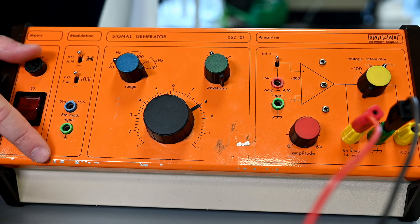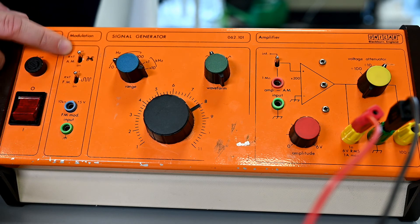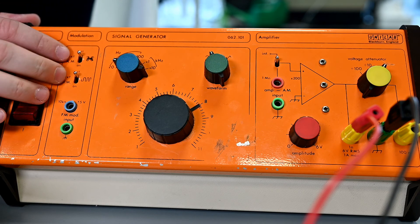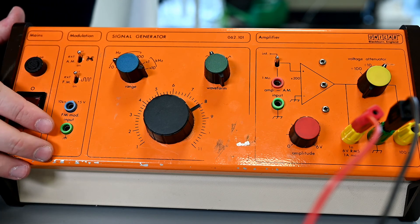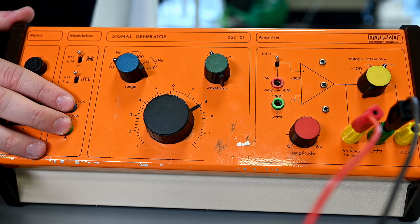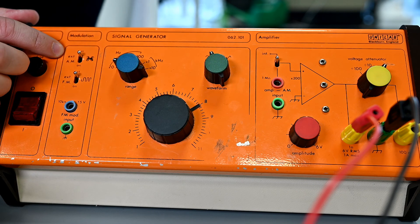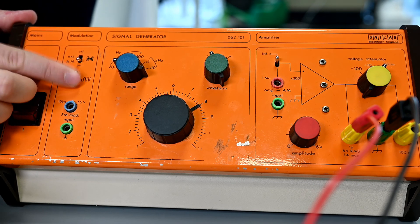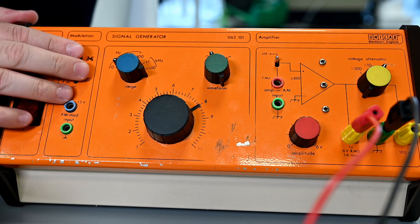We've got this modulation section here that just basically wants to be off. These signal generators have the ability to do frequency modulation with an external input or amplitude modulation with an external input. If you wanted to use either of those, you'd have to use those switches, but we need them to be off for this experiment.